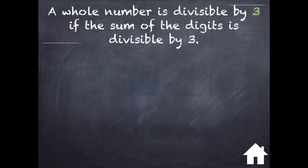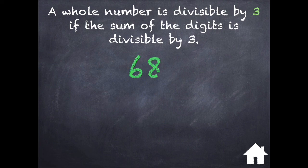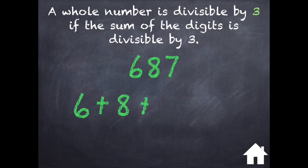A whole number is divisible by 3 if the sum of the digits is divisible by 3. Let's take a look at the number 687. I can determine if this number is divisible by 3 by adding up all the digits.